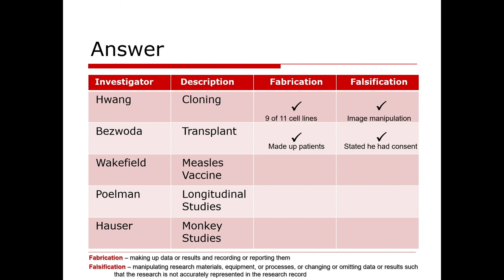For the measles vaccine case with Wakefield, the colitis was completely fabricated in many of the patients — there was no evidence of it and patients and their families didn't recall any evidence of colitis. The dates of reaction were fudged to make them appear after the vaccination, so this was falsification. For Pullman and the longitudinal studies, he made up and exaggerated the number of patients he actually had data on, and he destroyed data — this is part of the falsification.